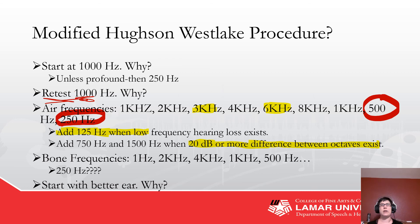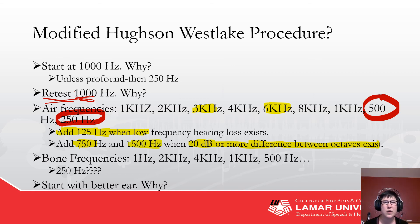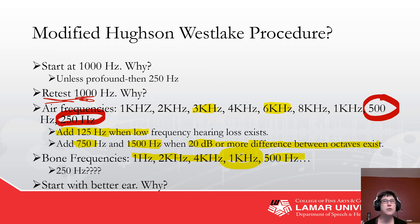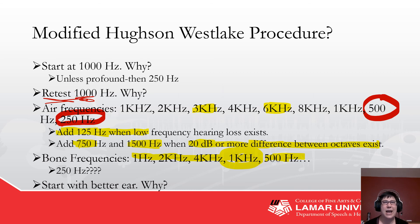If you know you're going to be working with hearing aids that have a bunch of channels, you may want to add 750 and 1,500 Hz even if there's not a 20 dB difference between the octaves. For bone conduction, it's going to be 1,000, 2,000, 4,000, retest 1,000, then 500 Hz. Those retests you really only have to do on the first year — it's part of psychophysical adaptive techniques that makes everything cross-check.